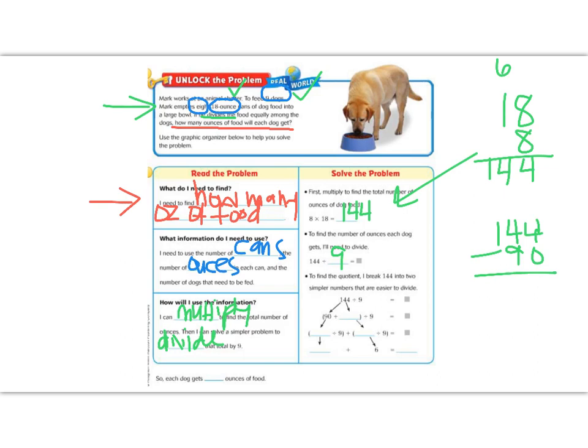4 minus 0 is 4. 9 minus 4 we have to borrow. So 14 minus 9 is 5. So we get 90 and 54. And the nice thing about that is that 54 is also divisible by nine.